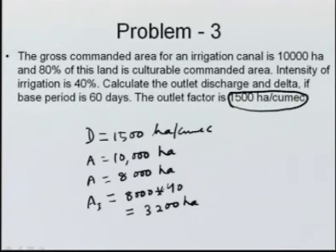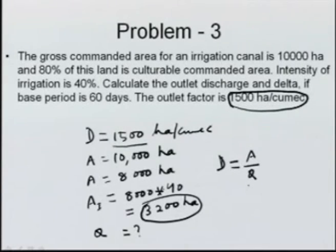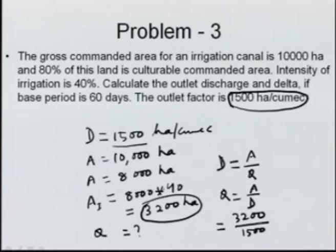For the outlet discharge, we use D = A/Q, so Q = A/D = 3200 / 1500. Calculate this with your calculator; the answer is approximately 2.1 cumec. That is the outlet discharge.